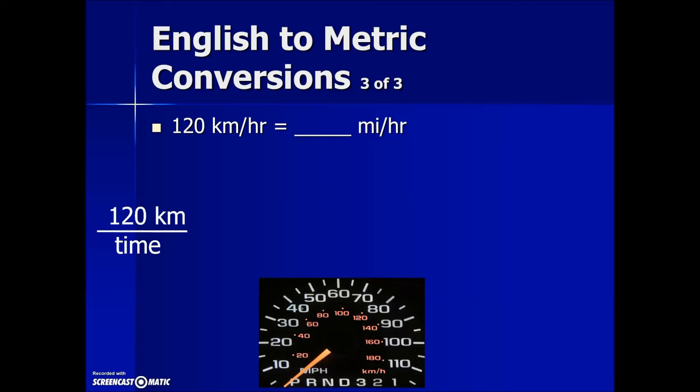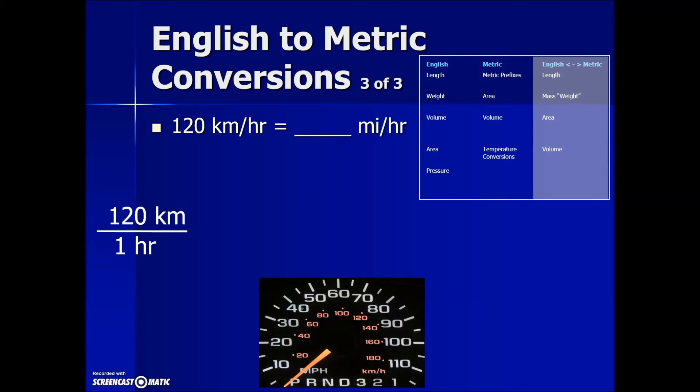So we start with the given value: 120 kilometers per one hour. We're looking on our conversion table for a relationship between kilometers and miles on that third column, which has the equivalent values in the English and metric system.